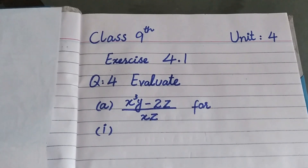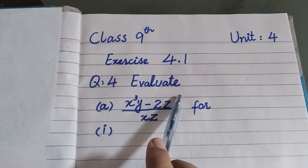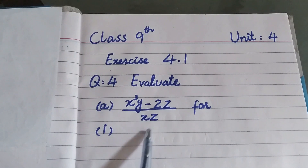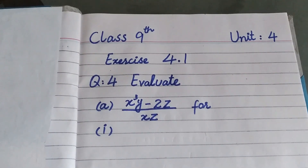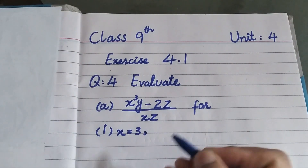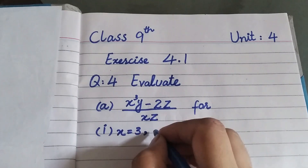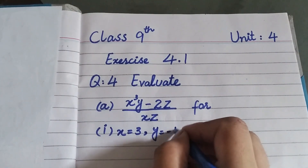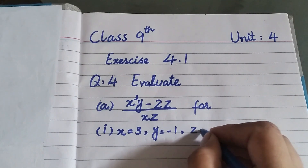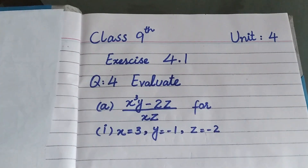So, this is my question in front of you. Question 4 — when you read this part: x cubed y minus 2z over xz. For part one, when you read x equal to 3, y equal to minus 1, and z equal to minus 2. This is just the first part.